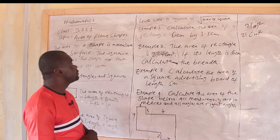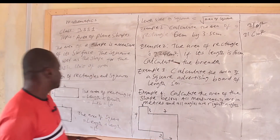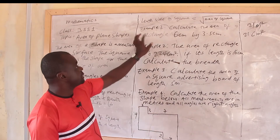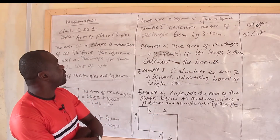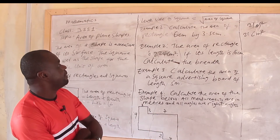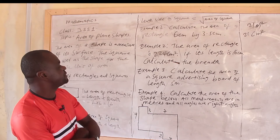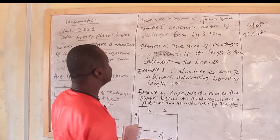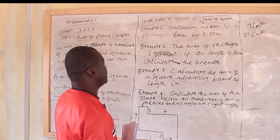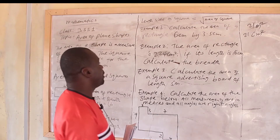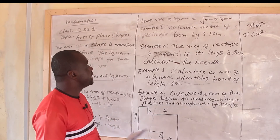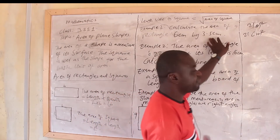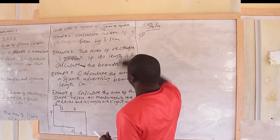So let us move on and have some examples on rectangles and squares. Look at example one: calculate the area of a rectangle 6 cm by 3.5 cm. What I mean by cm is centimeter. That is 6 cm by 3.5 cm.